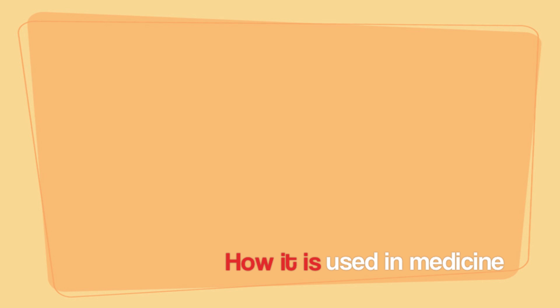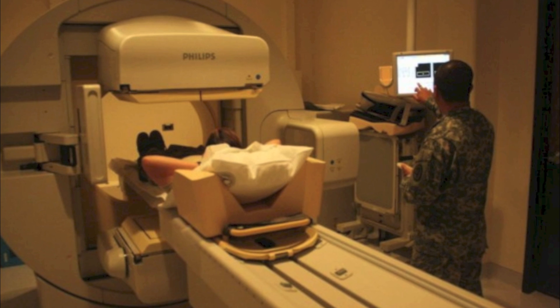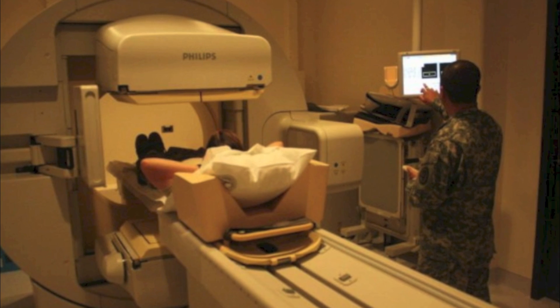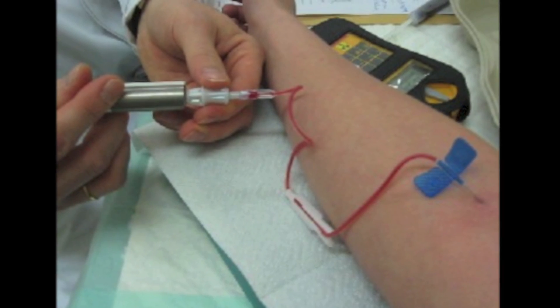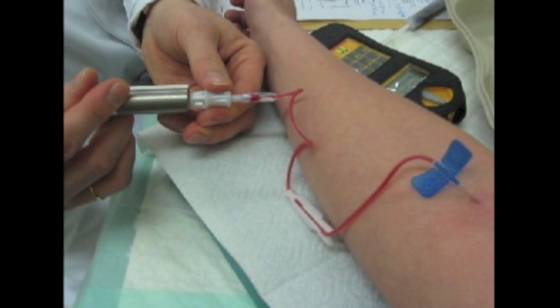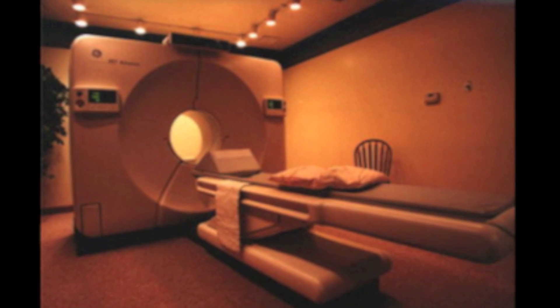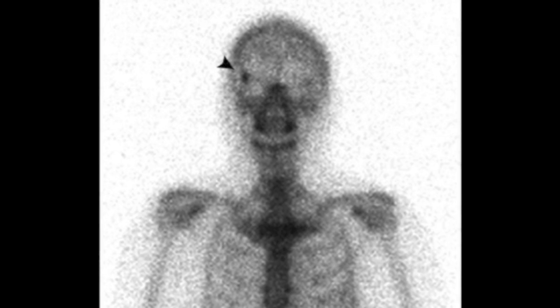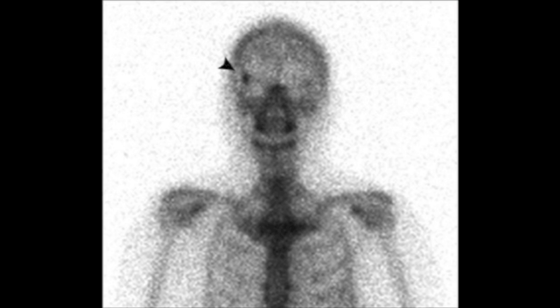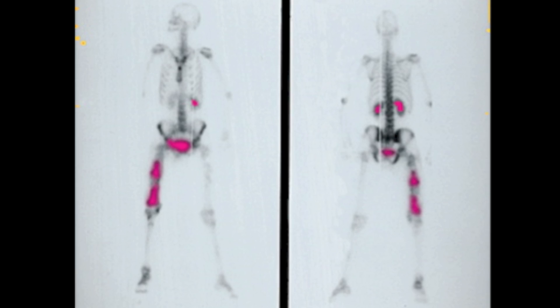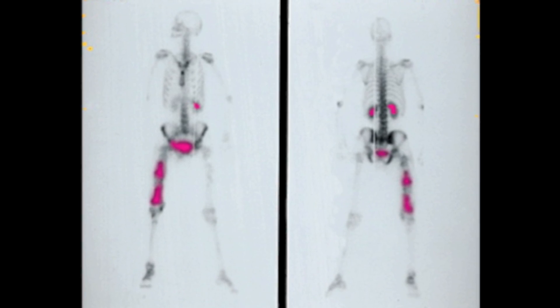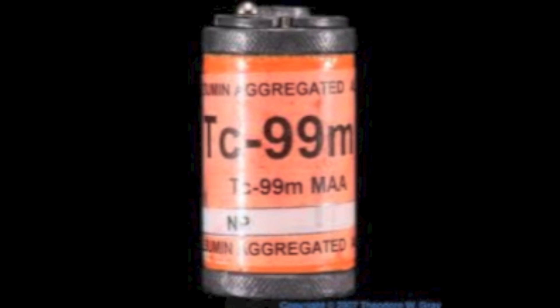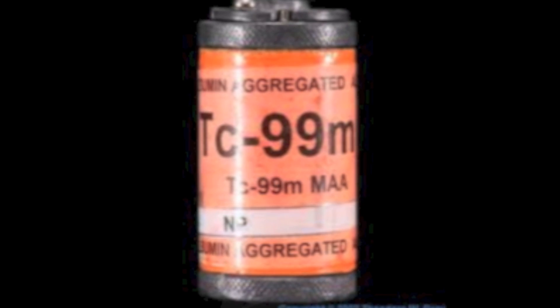Technetium-99m is widely used in medicine and the diagnosis of medical conditions. The isotope is used as a radioactive tracer, meaning it is injected into the patient's body as they are circled by a gamma camera. This gamma camera will then detect the injected gamma radiation and interpret it into an image scan, similar to an X-ray, which will then be used to diagnose the medical condition.